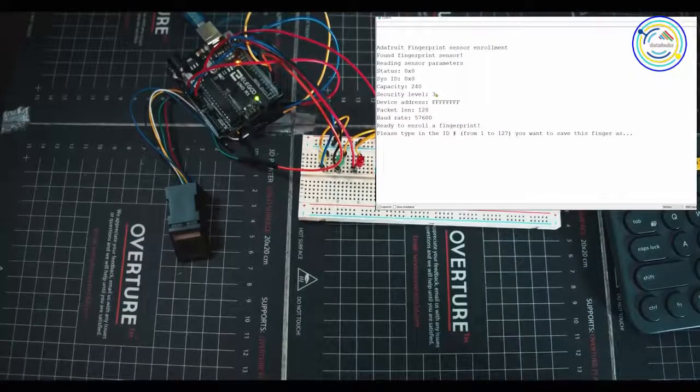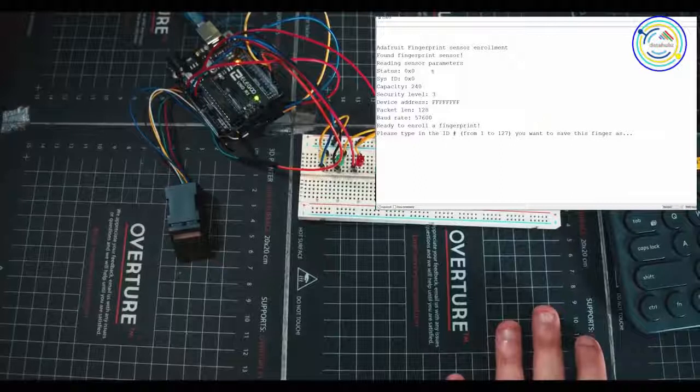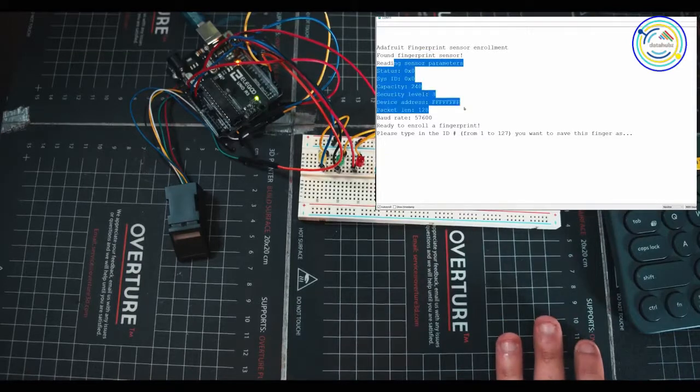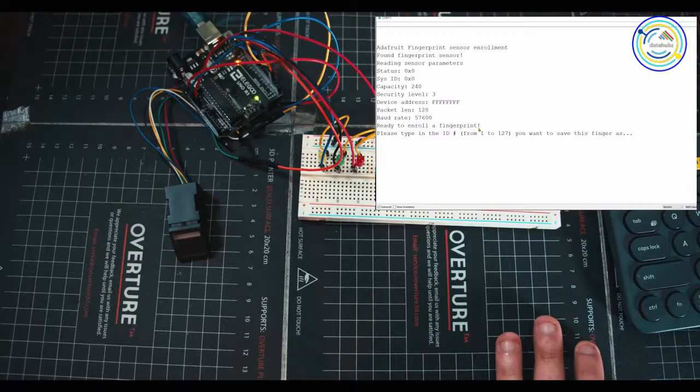Once that's done, open up Tools, Serial Monitor. Once you run your program and you open up your serial monitor, this is what you'll see right here. It's just going through the process. So the first thing is turning on the program, checking if a sensor exists, checking some settings and things that you can change throughout the program here. And then at the bottom you can see 'Ready to enroll a fingerprint. Please type in the ID number from 1 to 127 if you want to save this finger.'